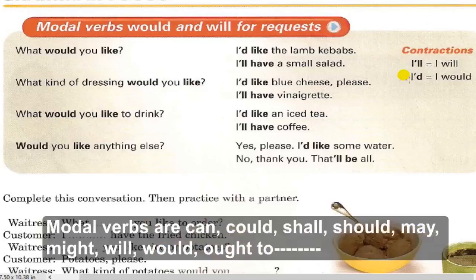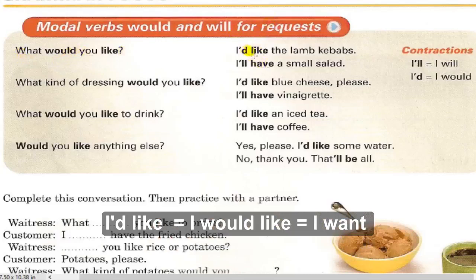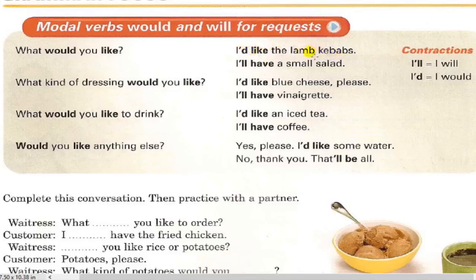Modal verbs include: can, could, shall, should, will, would, may, might, ought to. After the modal verb, we put the main verb. Modal verb plus main verb. For example: 'What would you like?' 'I'd like the lamb kebabs.' Note that the 'b' in lamb is silent. 'I'd like' means 'I would like' or 'I want.' I'd like the lamb kebabs. I'll have a small salad.